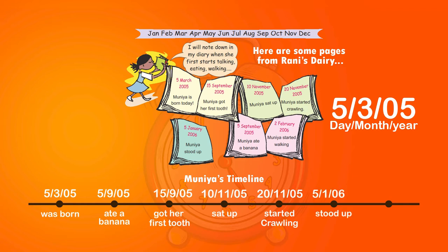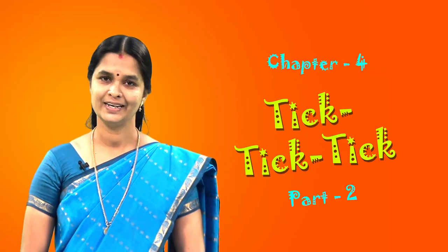The next entry is 5th January 2006. January is the first month, so it is written as 5/1/06. On this date Muniya stood up, so we write 'stood up.' On 2nd February 2006 she started walking. February is the second month, so we enter it as 2/2/06 and write 'started walking.'